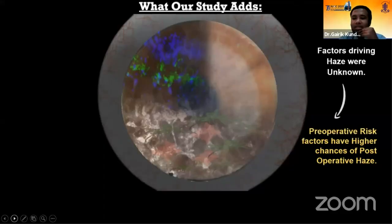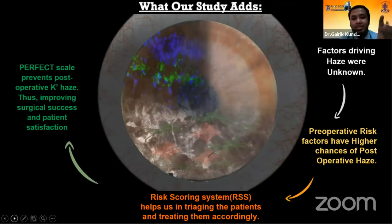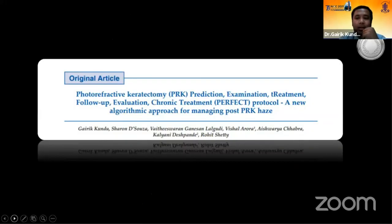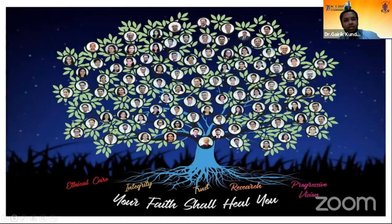The key message is that preoperative risk stratification is very important. It helps in triaging patients, and utilizing the score is very useful in decreasing post-PRK corneal HAZE. It's an honor to be part of the team which published this paper in the refractive edition of IJO, and this was awarded the IJO Silver Award at AIOS. Thank you for your patient listening.